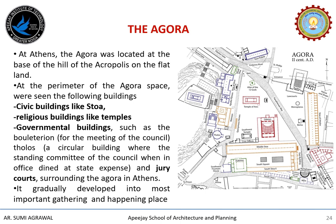A few of the stoas were single storey and others were double storey. In addition, there were government buildings like the Bouleuterion, which were council chambers where state representatives assembled to confer and decide about public affairs — it had a bank of seats like a theatre and was covered by a roof. There were also tholoi, which were circular buildings wherein standing committees of the council dined at state expense. There were also jury courts surrounding the Agora in Athens, and it gradually developed into the most important gathering and happening place.